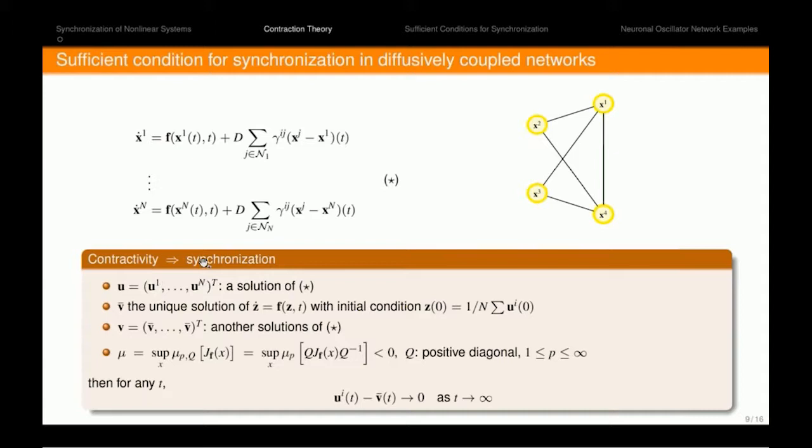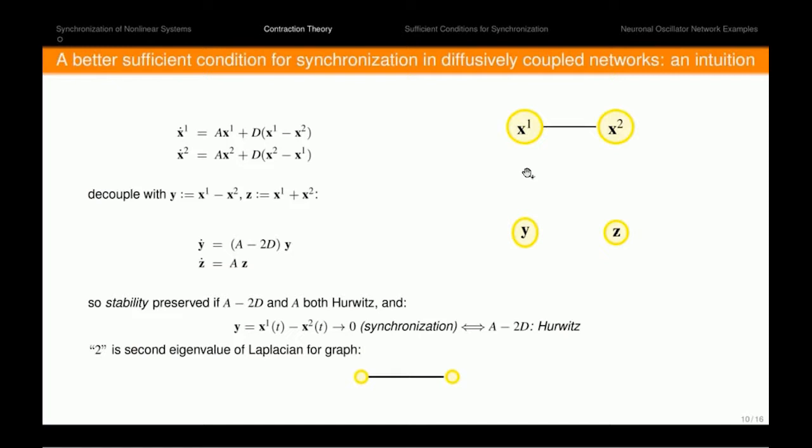And the reason is that synchronization is a weaker result compared to contractivity. So contractivity always implies synchronization. But the point is that here in our condition, we only use the dynamics of each node, and we don't bring in the role of the structure of the graph and the diffusion matrix. So let me give you an intuition example here. Suppose that we have two identical linear systems which are connected to each other. By this change of coordinate, we can decouple these systems, y and z. So the stability of the whole system is preserved if both A minus 2D and A are Hurwitz. But here for synchronization, we really don't need the stability of the second system. So the stability of the first system would be enough, and this is equivalent to say that A minus 2D is Hurwitz. So here you see that the condition not only depends on the dynamics of each node, but it also depends on the diffusion matrix D and the structure of the graph, which is represented here by the second eigenvalue of the Laplacian of the graph.